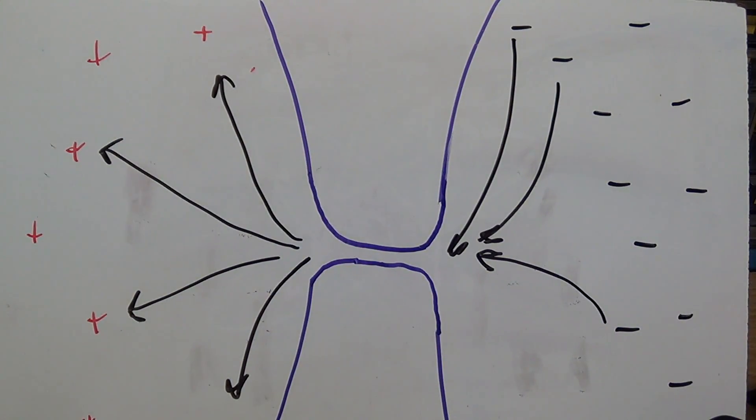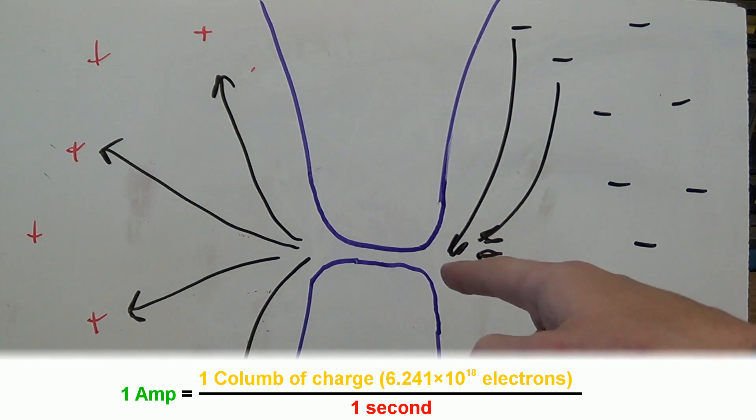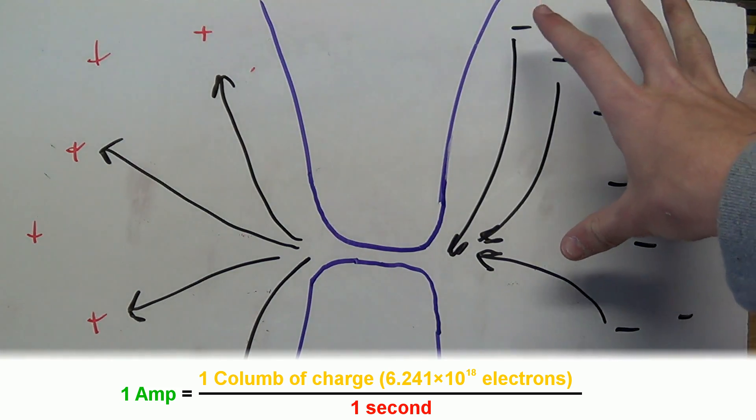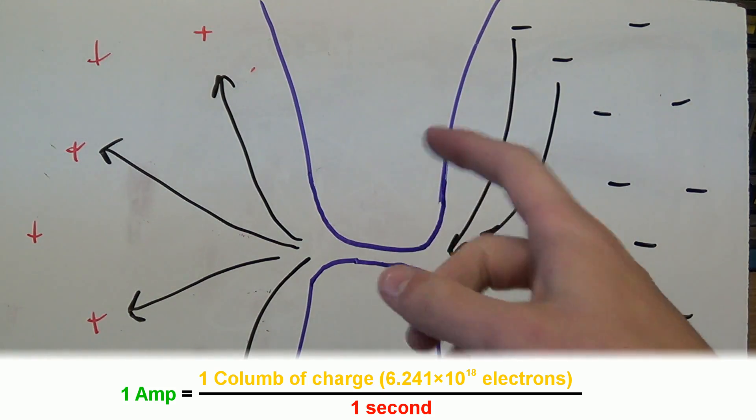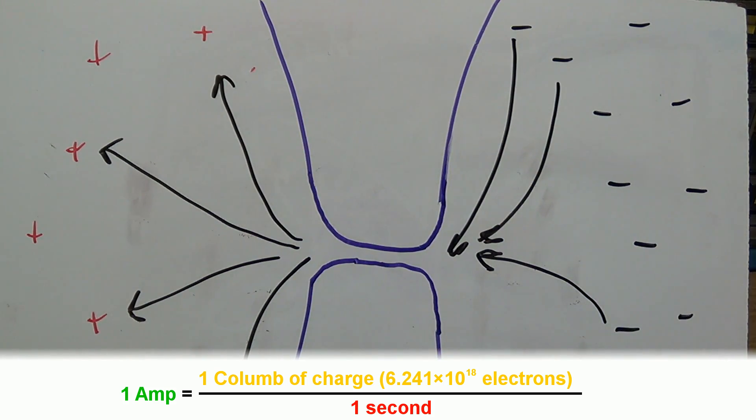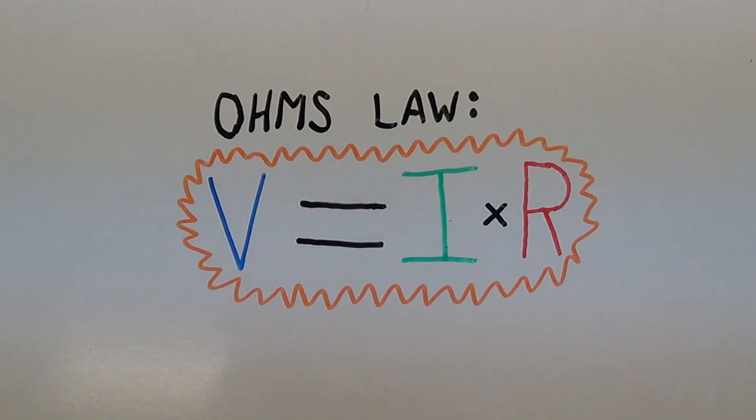Now the way current is measured, it's one coulomb of charge, basically it's just the number of electrons that flow through some given point per second. So, now that we know about voltage, current, and resistance.